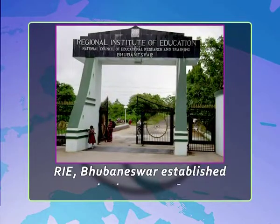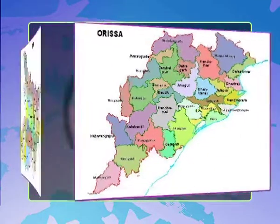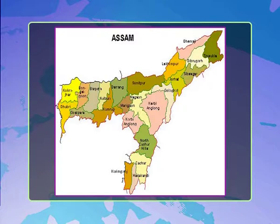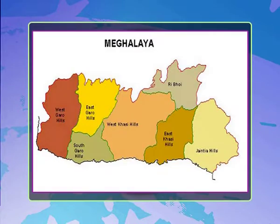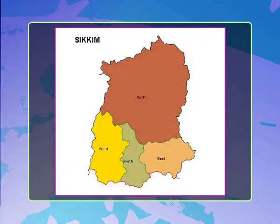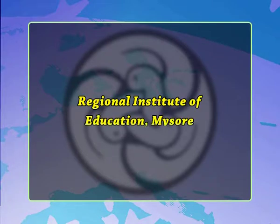The Regional Institute of Education, Bhubaneswar (RIE Bhubaneswar), established in 1963, caters to the educational needs—pre-service and in-service—of teachers of the eastern region, including the states of Odisha, Bihar, Jharkhand, West Bengal, Assam, Arunachal Pradesh, Manipur, Meghalaya, Mizoram, Nagaland, Sikkim, Tripura, and the Union Territory of Andaman and Nicobar Islands.